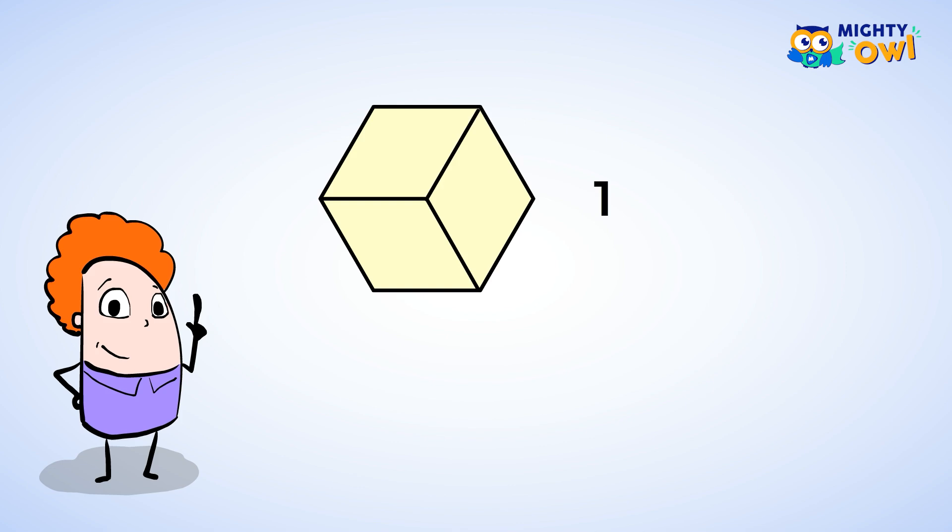What if we split it into three equal parts? We now have three out of three parts shaded, or three-thirds. Let's split it into six equal parts. Now we have six sixths.